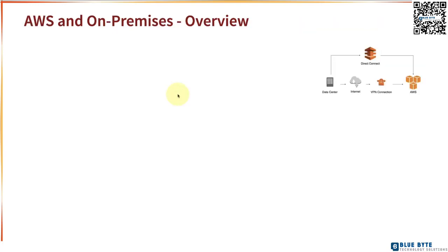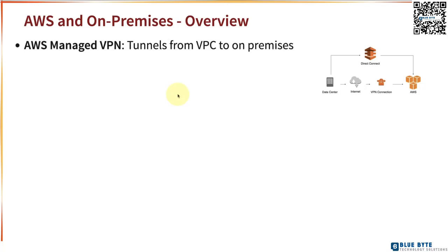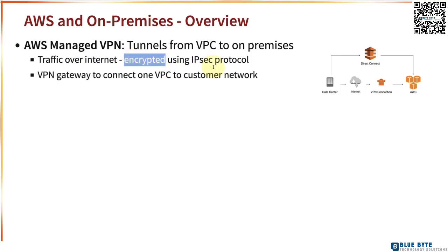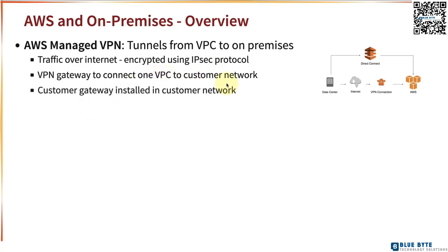Now if you want to connect AWS with on-premises and set up a hybrid cloud, what are the options? The first option is AWS Managed VPN — these are tunnels from VPC to on-premises. The traffic between AWS and your on-premises goes over the internet and is encrypted using the IPSec protocol. You would set up a VPN gateway to connect one VPC to the customer network and install a customer gateway in the customer network.